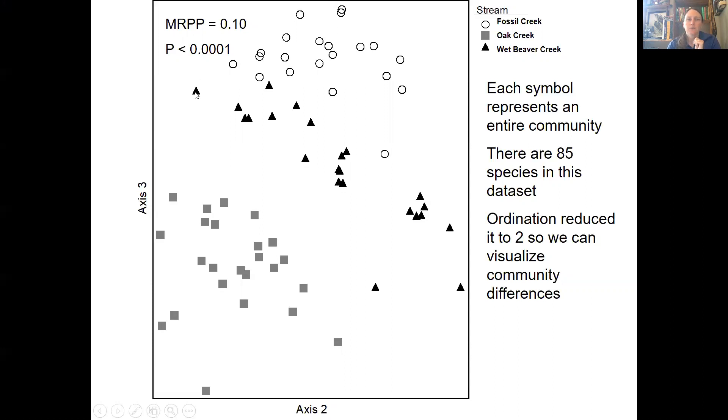Now the closer these symbols are to one another in space, the more similar their communities. So these two circles that are linked right here are very similar communities. The further symbols are apart in space, the more different their communities are. And so what's neat about ordination is that it takes this 85 dimensional community data set, smashes it down into two dimensions, and then shows you how similar the communities are based on their spatial separation. And so you can see there's a really neat grouping down here of gray boxes. There's kind of like a big stripe of black triangles in the middle and then all these little circles at the top. So ordination reduced the dimensionality of this data set down into two dimensions so we can see these groupings better.